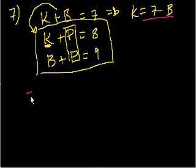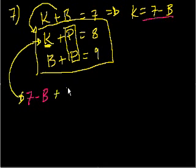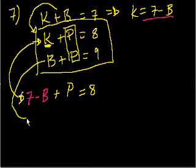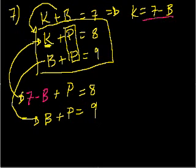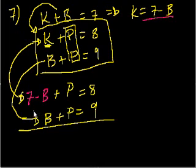Right? So if we substitute that into this equation, we'll get, so let me just, this is 7 minus B. So we'll get 7 minus B. And I'm just rewriting this top equation. That's this. Plus P is equal to 8. And then this bottom equation still is B plus P is equal to 9. I could add the 7 or subtract 7 from both sides right now, but I'm just going to actually add the equations because I like how these B's are going to cancel out.